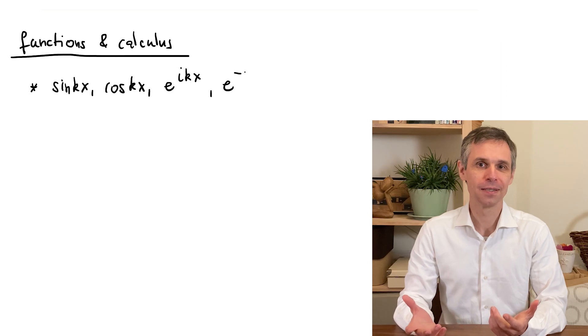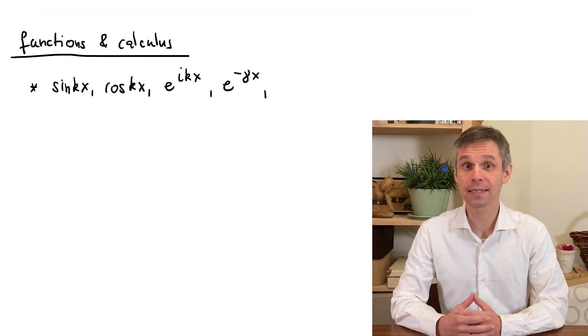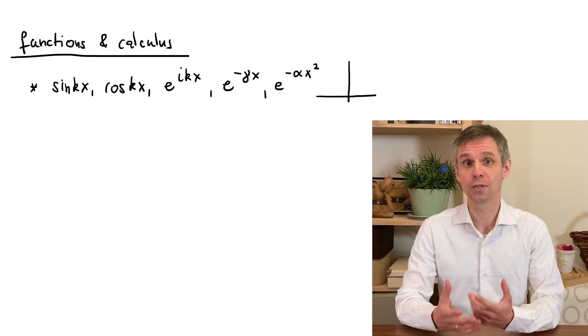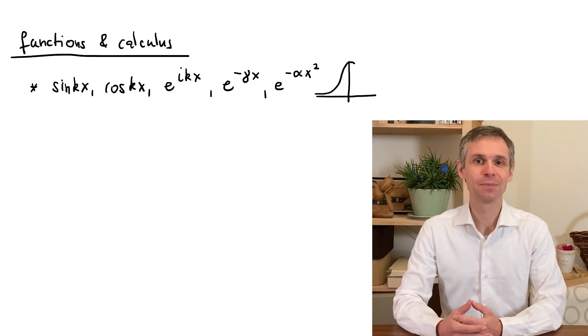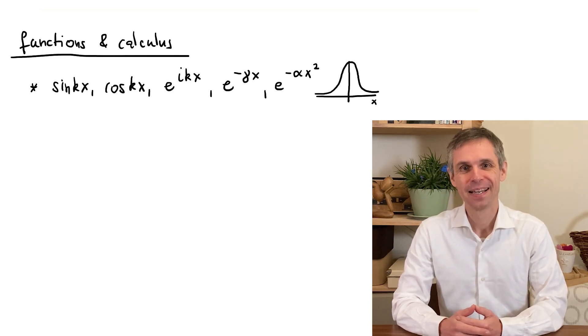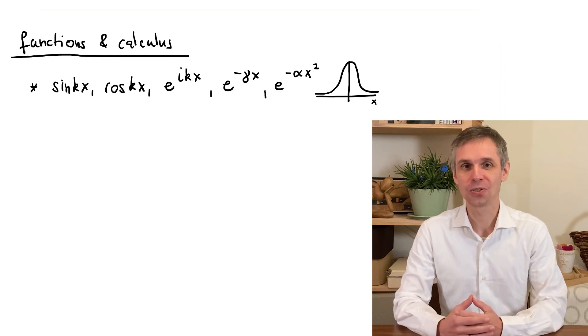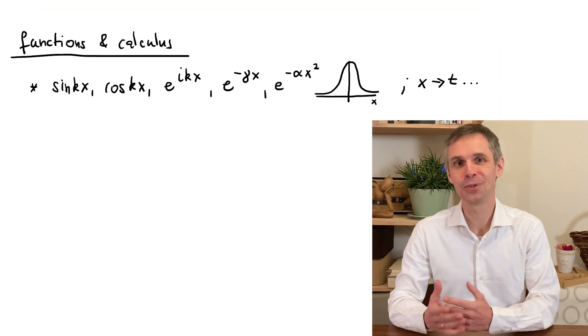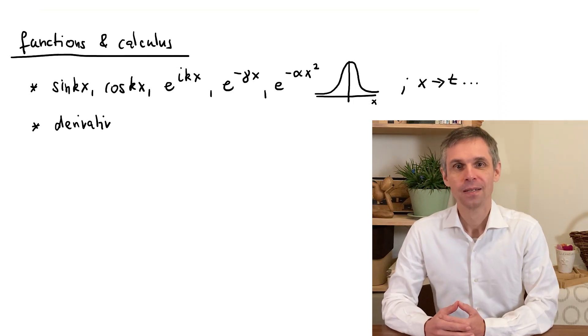But we will also encounter the exponential function in other contexts, with real exponents, or even the form of a so-called Gaussian, which is the bell-shaped curve sketched here. And of course, these functions also appear with other arguments in place of x, such as t for time.